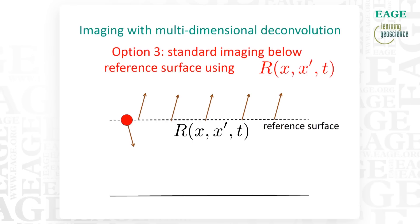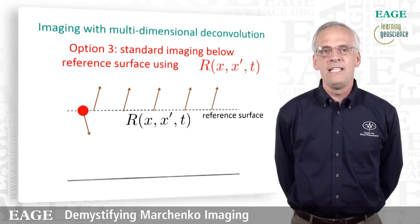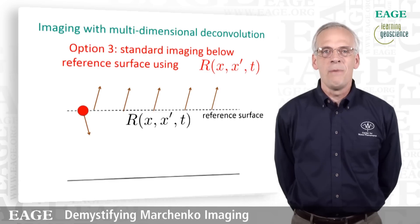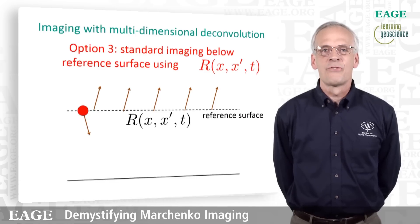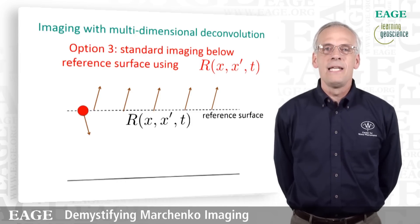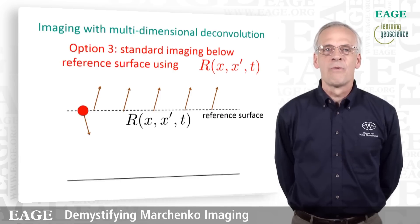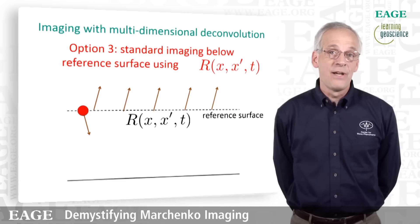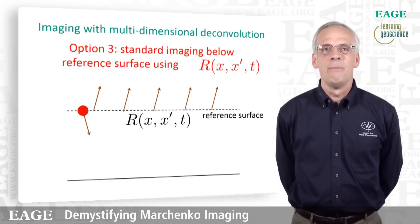The third option is to take this reflectivity and apply any type of imaging or migration scheme to create a model of the subsurface below the reference surface. You could do Kirchhoff migration, reverse time migration — it doesn't really matter. We've stripped away the imprint of the overburden and the free surface, and now we can take these reflected waves recorded at the reference surface to create an image below it. This might be a very good way to proceed, for example, for sub-salt imaging.